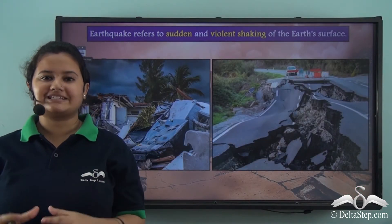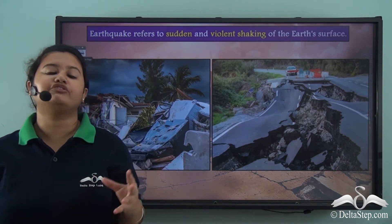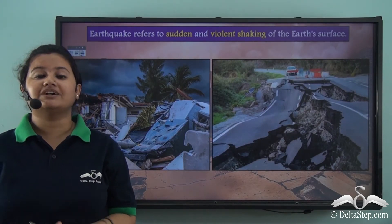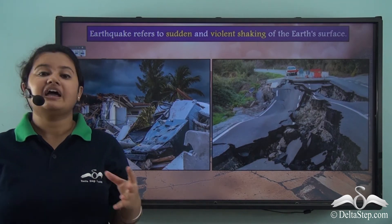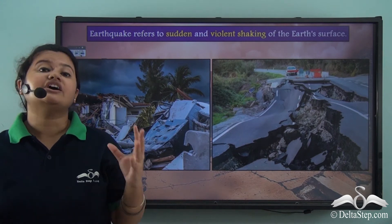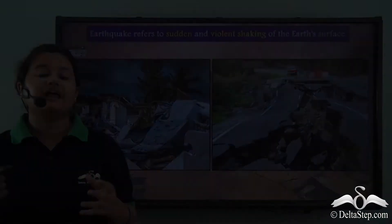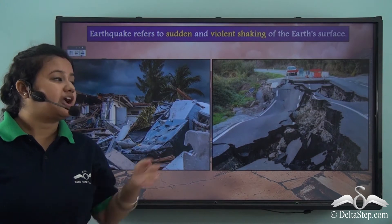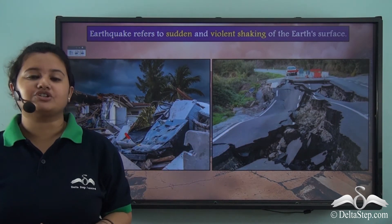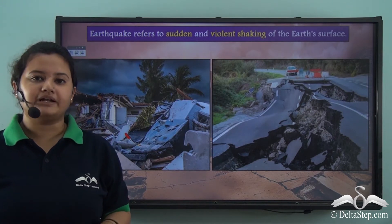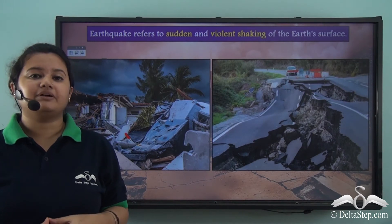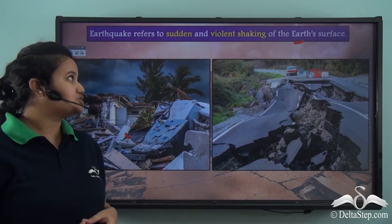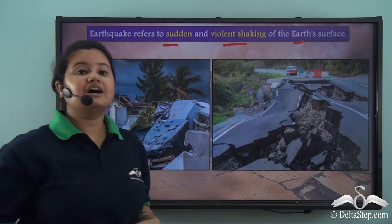So we have read about different examples of earthquakes of different magnitudes. Now, what do you mean by an earthquake? An earthquake refers to the sudden and intense shaking of the Earth's surface. This shaking is caused due to the release of energy from the Earth's interior. During an earthquake, cracks develop on the roads, buildings demolish, and people are trampled under buildings and killed. These destructions happen due to the intense shaking of the Earth's surface.